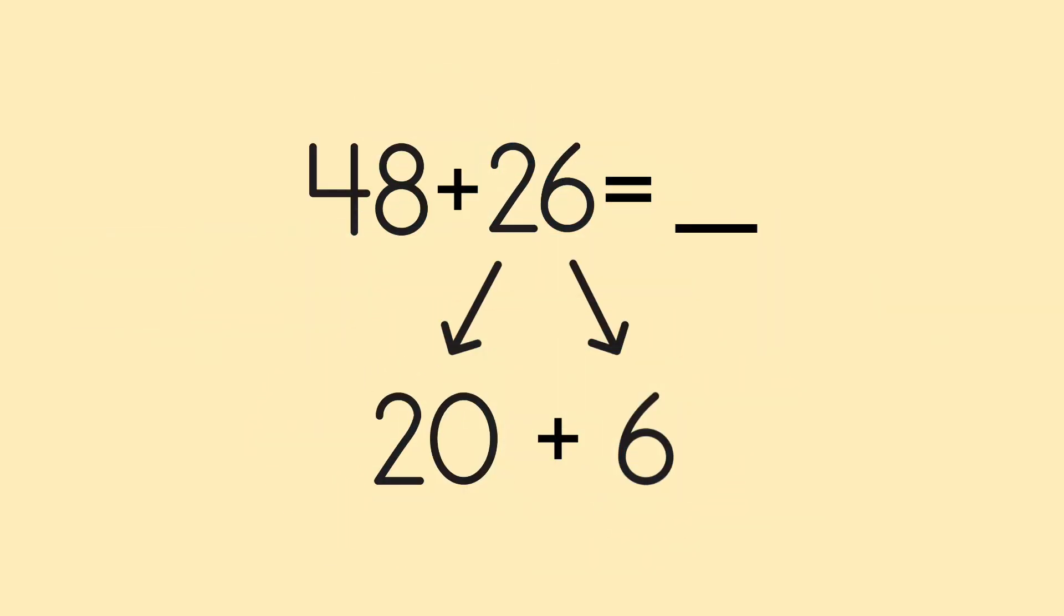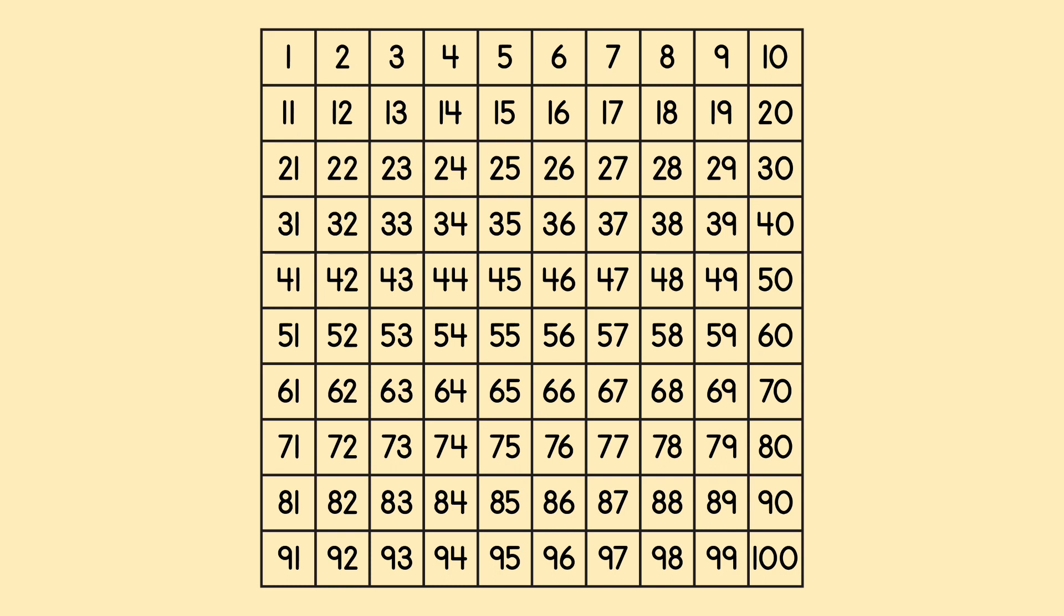We're going to drop down 20 on our hundreds chart. To do that, we just move two blocks directly below. 10, 20. And then we count on 6 more.